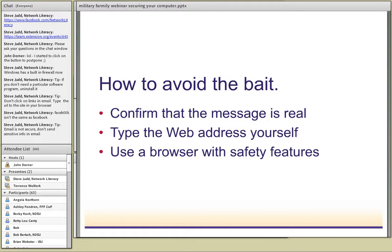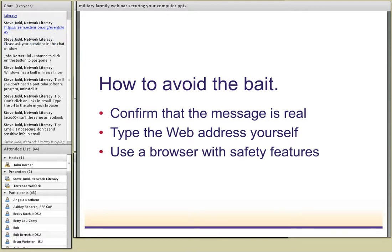When you want to check on a website, go directly to the website. If Bank of America sends you an email, go directly to www.bankofamerica.com and see if you actually have that message there. Or use your bookmark. Also use a browser with safety features - Internet Explorer has what's called Smart Screen Filter, plus pop-up blockers by default. If you ever get an email you question, go visit a website that identifies scams. One of the most popular ones is Snopes.com - www.snopes.com.